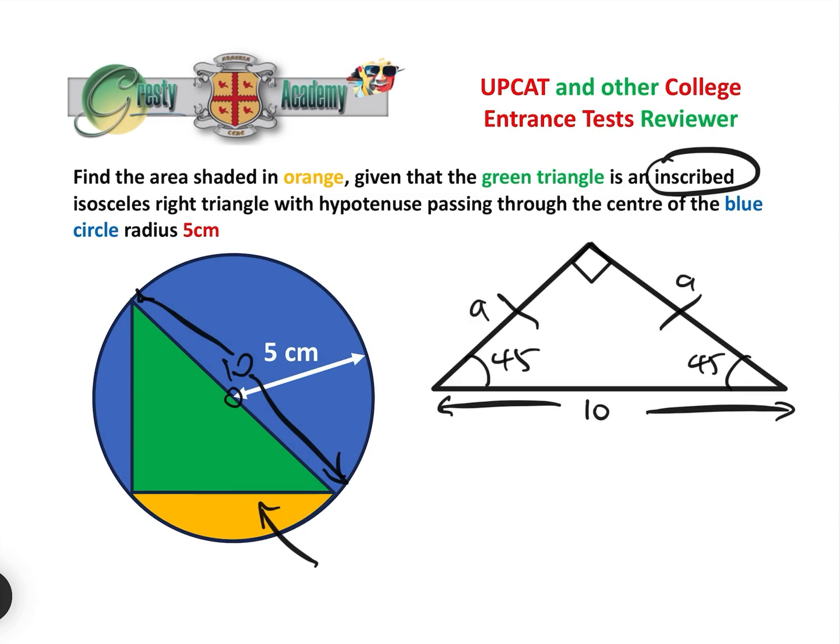So we can work out the length of these two sides by Pythagoras. We know that 10 squared equals a squared add a squared, i.e. 2a squared equals 100, so a equals the square root of 50, and we're going to need that in a minute.